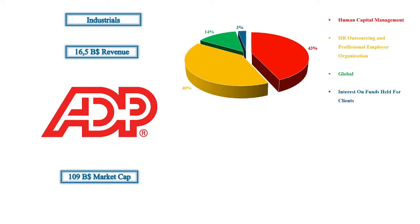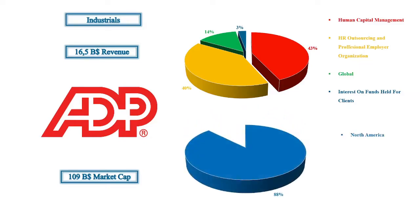Regarding the geographical diversification of the company, 88% of the revenue is made in North America, 8% in Europe, 2% in Canada, and 2% in other countries. If you want to know the exact numbers of how the revenue is divided, you can check out the annual report of ADP which I have linked down below.